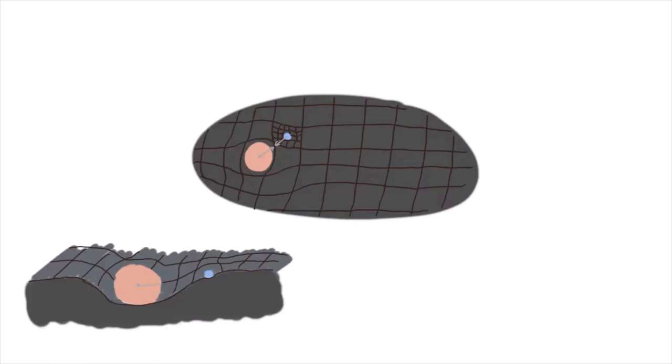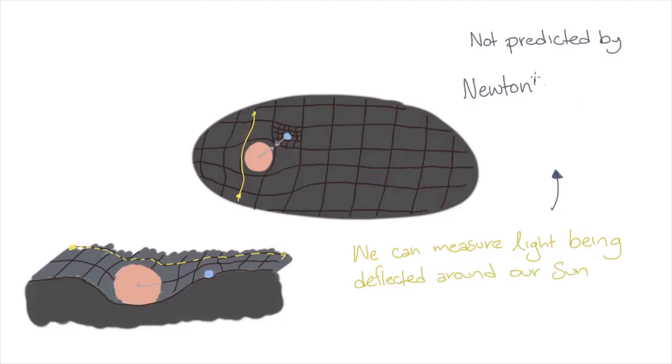One area in which Einstein's theory of general relativity differs from Newton's law of universal gravitation is that light, like everything, travels along the curvature of space-time. We have actually measured light deflection around our Sun as it travels through space-time. Since light has no mass, Newton's law of universal gravitation could never predict that light would actually experience a gravitational force.